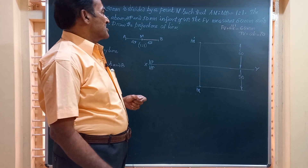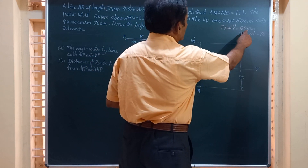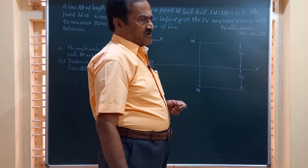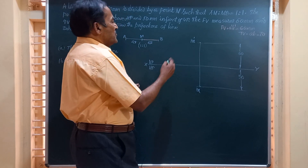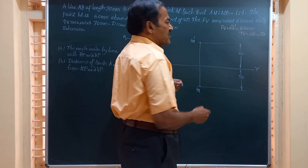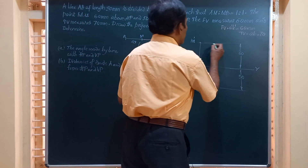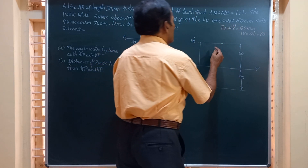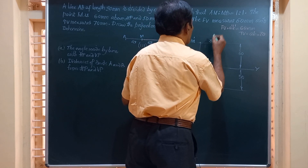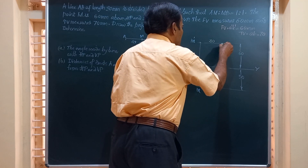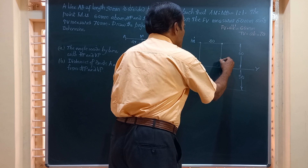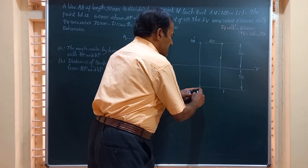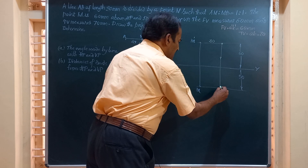We are given the front view A dash B dash as 60 mm and the top view is also given as 70 mm. We have this point M dash, the midpoint of line AB. We are going to mark a point of length equal to half the front view length, that is 30 mm. I take 30 mm length and draw a vertical line from there until it touches the locus of end M. I call this point as 1.